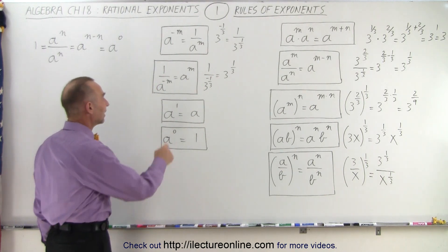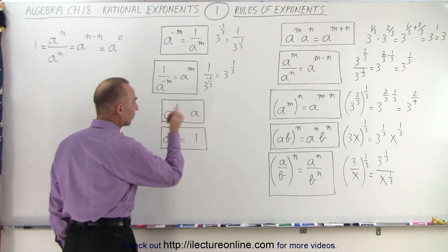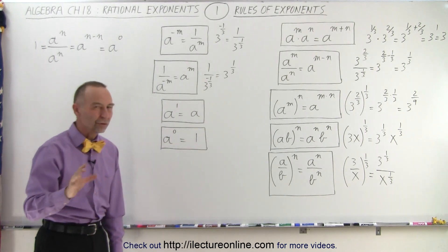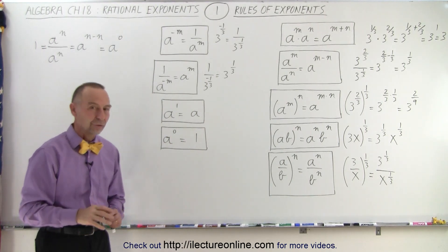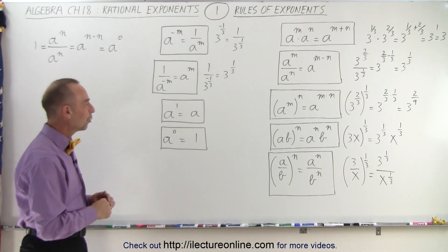And of course, we can't forget that a to the first power is simply a, so any number raised to the first power, you get the same number back. And any number raised to the zero power, you get one. Of course, zero to the zero power, there's some controversy about what that exactly means, so we'll skip that for now and approach it later.